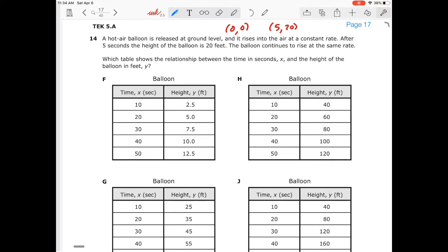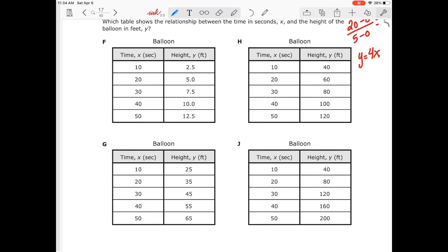And the balloon continues to rise at the same rate, which table shows the relationship between time in seconds x and the height of the balloon in feet. So that means I'm going to need to find my slope to write my equation. So that's going to be 20 minus 0 over 5 minus 0, which is going to give me 20 divided by 5, which is going to be 4. So my equation is going to be y equals 4x.